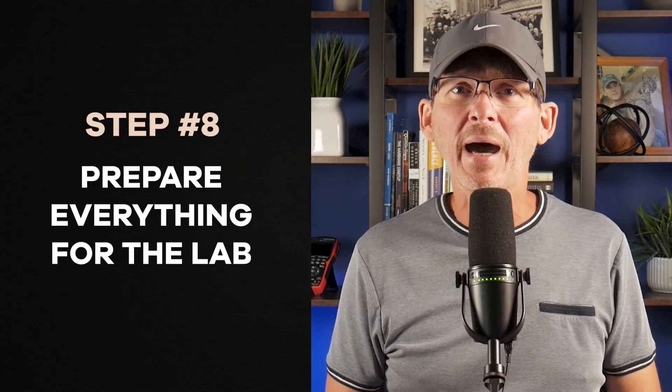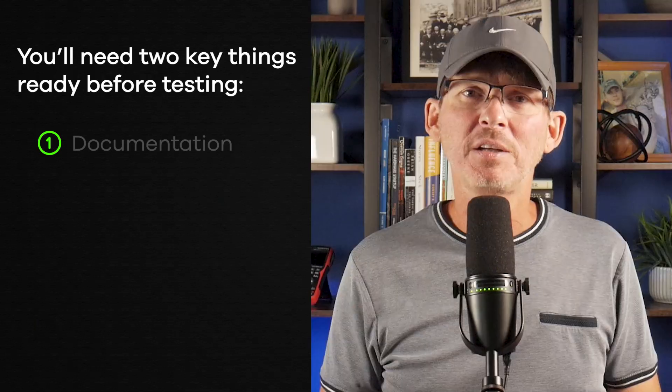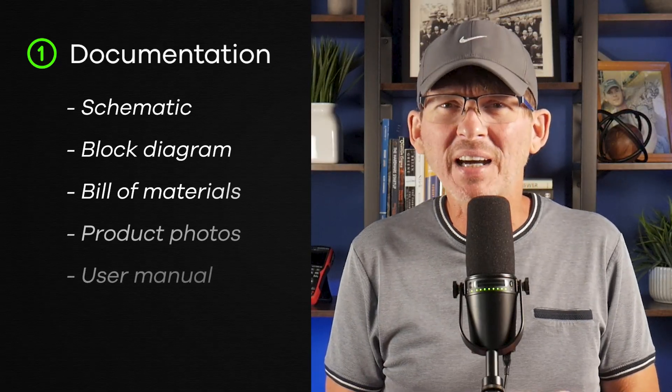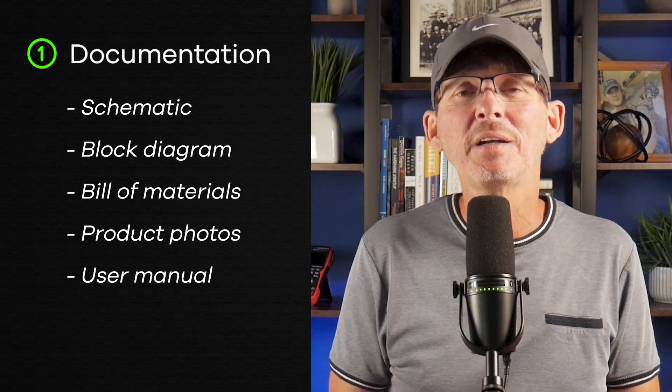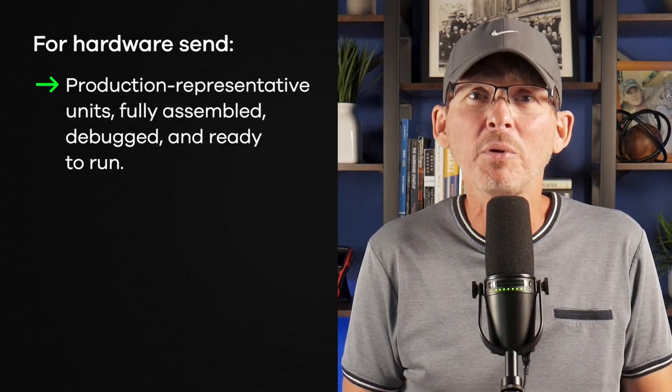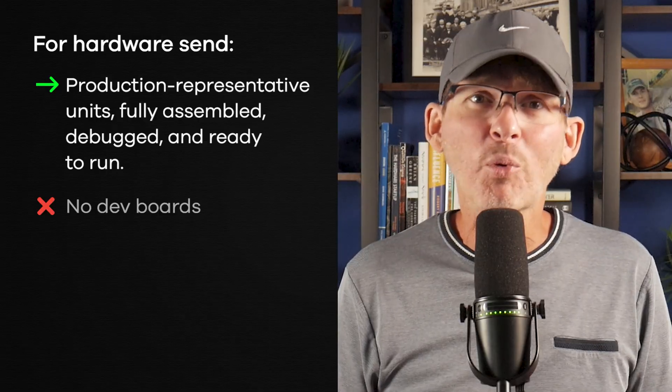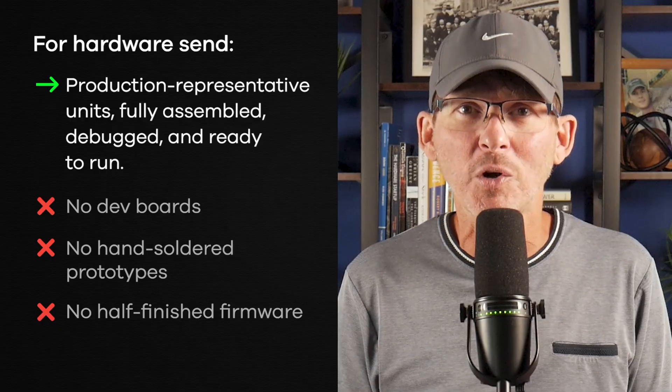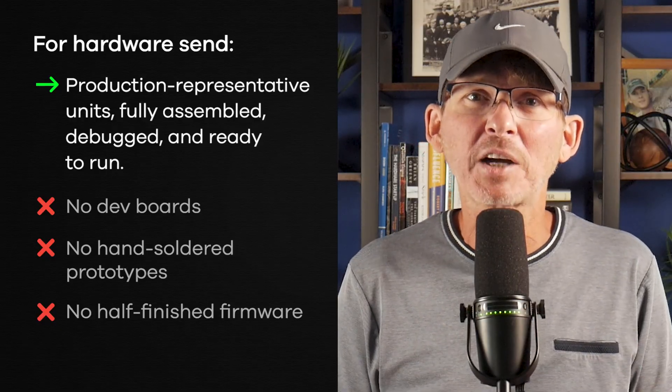Step eight: prepare everything for the lab. You'll need two main things ready before testing — your documentation and your hardware samples. For documentation, you'll usually need a schematic, a block diagram, a bill of materials, product photos, and a user manual. Full certification may also require forms and labeling details. For hardware, send production-representative units that are fully assembled, debugged, and programmed ready to run — no dev boards, no hand-soldered prototypes, and definitely no half-finished firmware. The lab needs to test your actual production product, not a prototype. Double-check that your documentation matches your hardware, and make sure the units are stable and reliable. The lab's job is to test emissions, not debug your hardware or code.